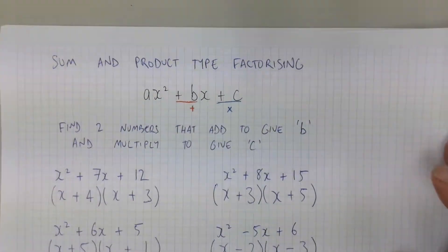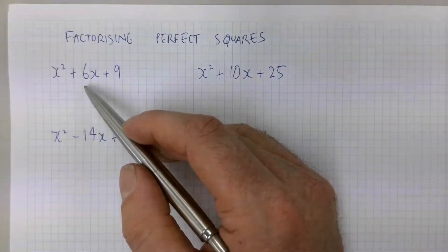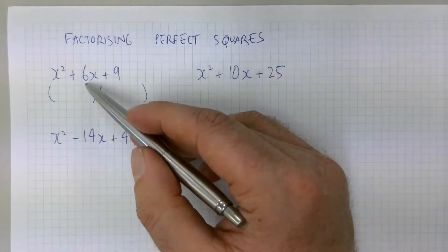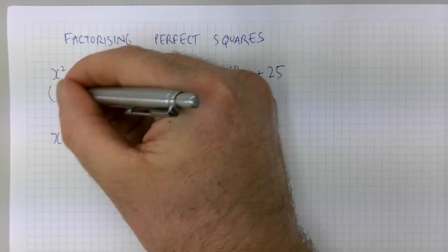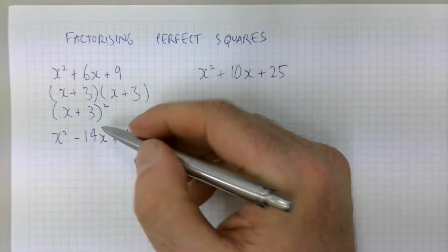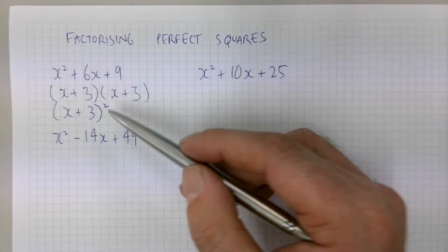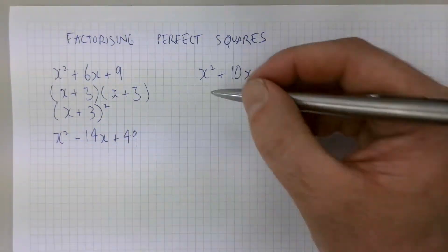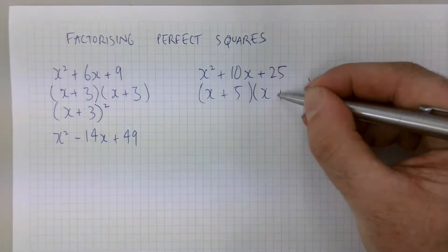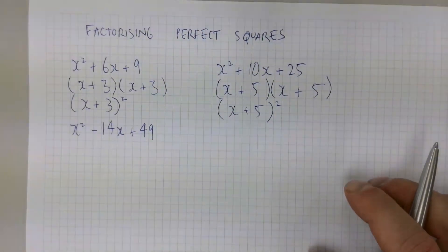For the next couple of examples, you can use the same sum of products process, but you'll notice the two numbers are actually the same. Two numbers that multiply to give 9 and add to give 6 are 3 and 3, so we get (x + 3)(x + 3), which simplifies to (x + 3)² — that's why it's called a perfect square. Similarly, two numbers that multiply to give 25 and add to give 10 are 5 and 5, giving (x + 5)².